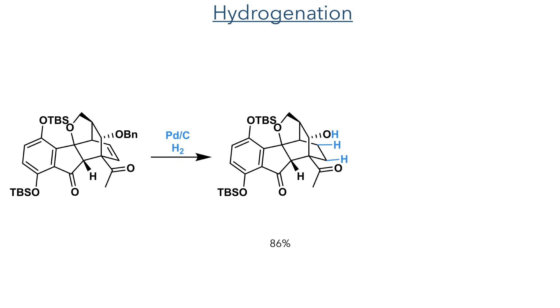At this stage of the synthesis, the benzyl protecting group could be removed using palladium on charcoal and hydrogen gas. This also served to hydrogenate the alkene and complete the formation of the bicyclo[2.2.2]octane moiety.